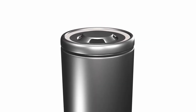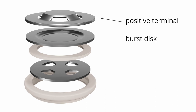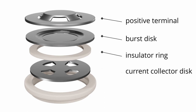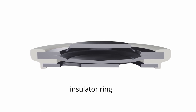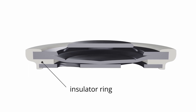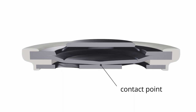If we take a closer look at the structure of the top cap, several components can be identified: the positive terminal, a burst disc, an insulator ring, and a current collector disc. The whole assembly is kept together by a sealing ring that seals and insulates the whole assembly against the cell can. The electrodes are connected to the current collector disc, so the CID has to interrupt the connection between the current collector disc and the positive terminal. To achieve this, the burst disc and the current collector disc are separated from each other by an insulator ring, except at a small contact point at the center. To guarantee a reliable, low-resistance contact between those discs, they are typically spot welded together at the contact point.